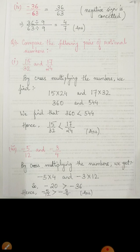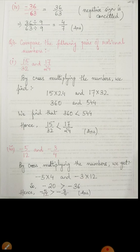Number 3: minus 5 by 12 and minus 3 by 4. It is similar to the above question — we cross multiply the numbers. On one hand, minus 5 into 4 is minus 20. On the right-hand side, minus 3 into 12 is minus 36. Now, since both are negative integers, and in negative integers the number with the lower absolute value is actually higher, minus 20 is greater than minus 36. Hence, minus 5 by 12 is greater than minus 3 by 4.